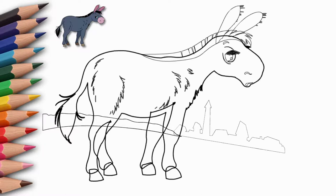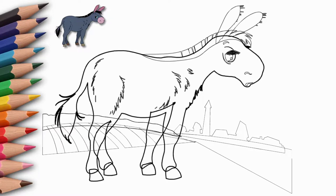Our donkey stands on the grass and looks at us, turning his head slightly. Now we will paint our drawing with colored pencils, paints or felt tip pens.